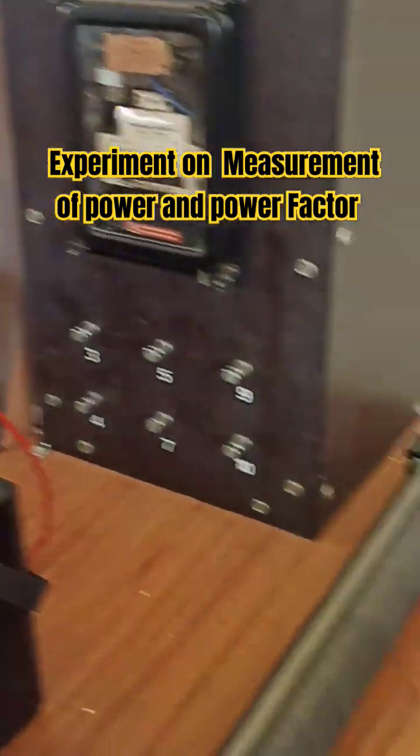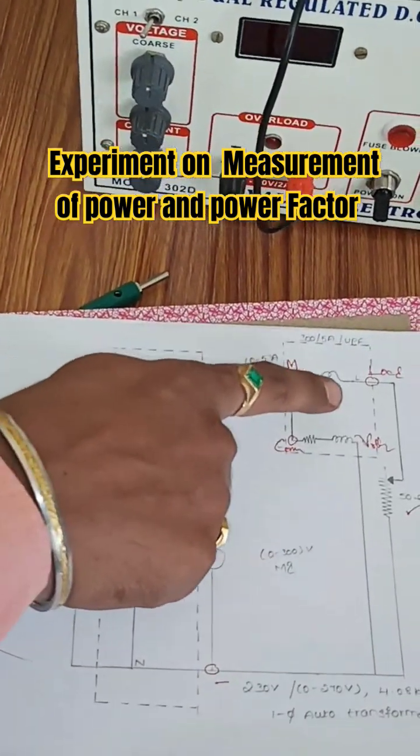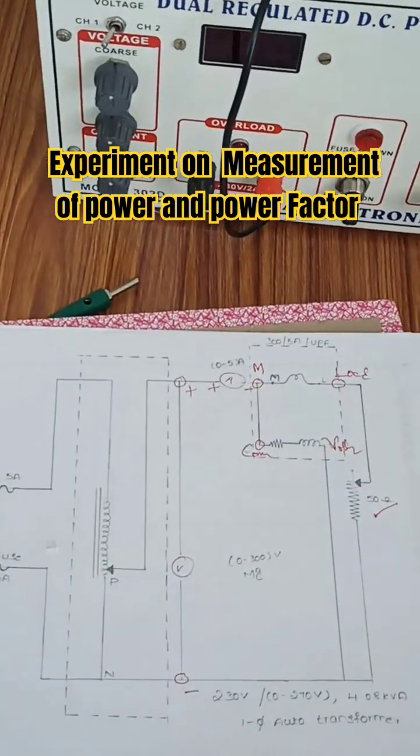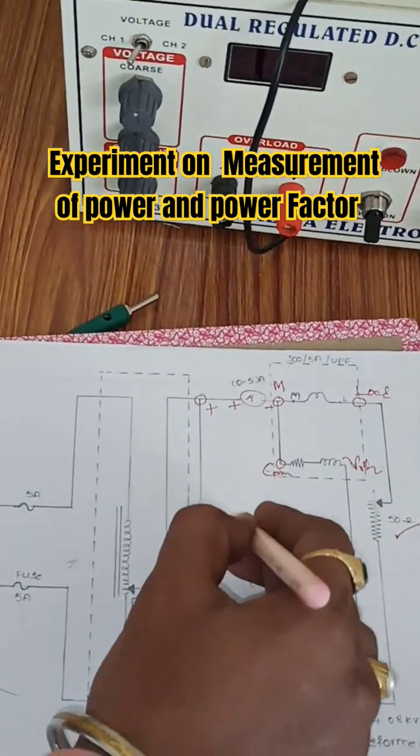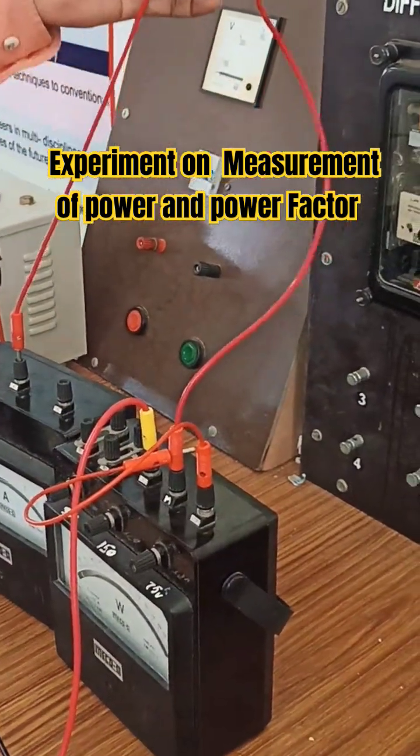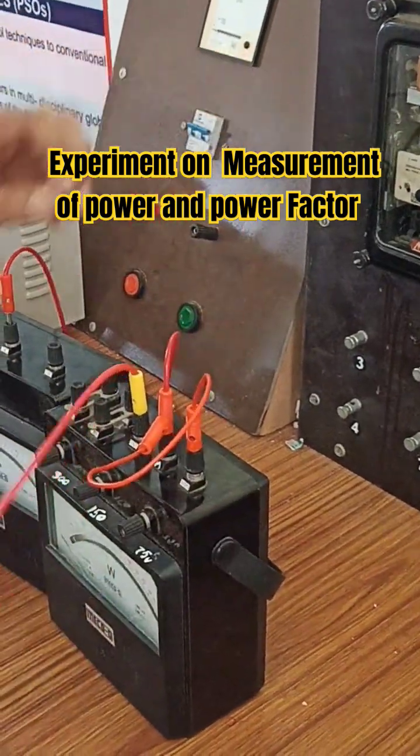As per the circuit diagram, I am connecting the voltmeter and the wattmeter and the rheostat which forms a closed path. From positive supply to ammeter, and output of the ammeter to M. M and C is short circuited, from L to load.